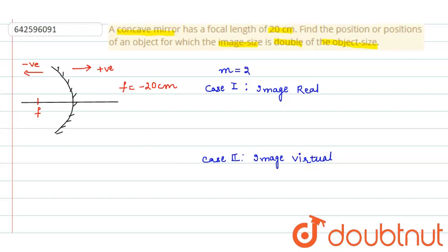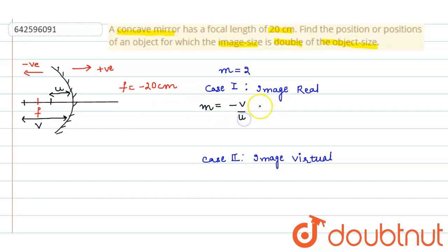Taking Case 1, where the image formed is real: the object is placed at a distance u from the mirror, and the image is formed on the reflecting side. The magnification formula is m = −v/u, and since magnification is 2, we get −v/u = 2, which implies v = −2u.